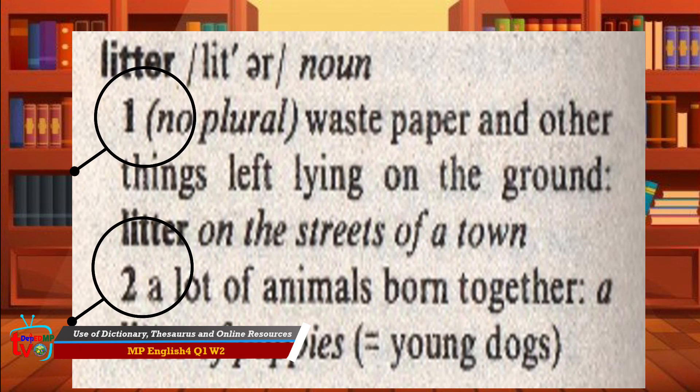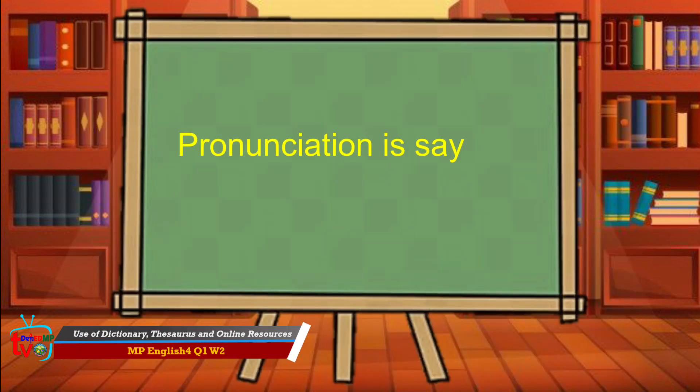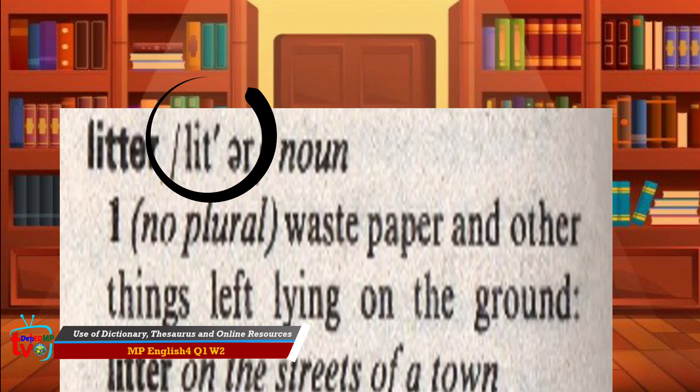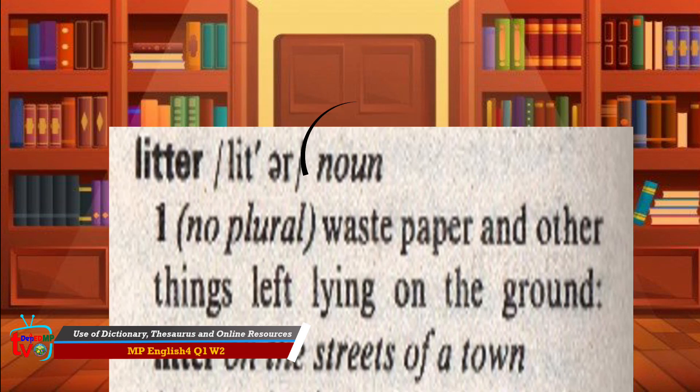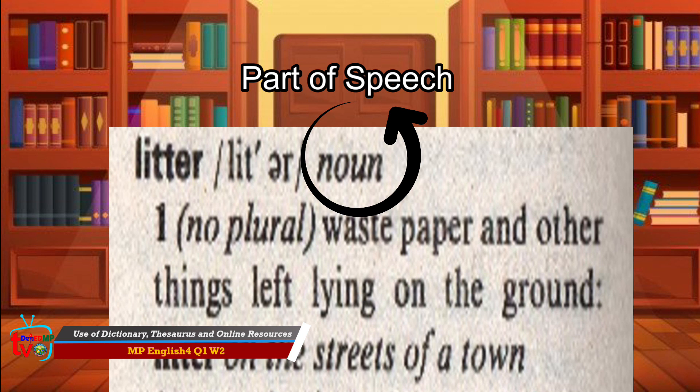Some words have two or more meanings and they are separated by numbers. Pronunciation is knowing how to say the word correctly. Syllables are used to show how the word is to be said or read. The part of speech is also seen in the dictionary. Let's have a full look at the different parts of the dictionary in this picture.